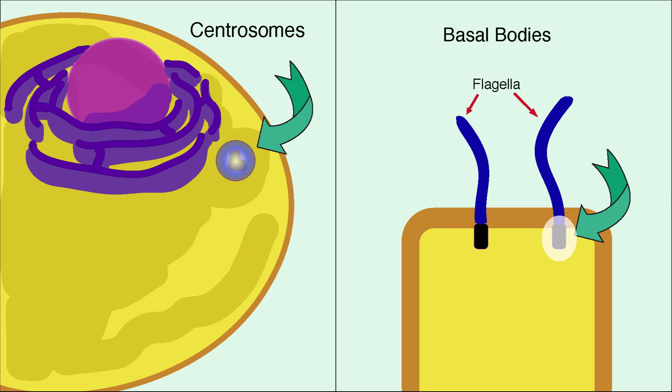There are two types of organizing centers: basal bodies, where cilia and flagella originate, and centrosomes, where spindle fibers and other cytoskeletal microtubules form.